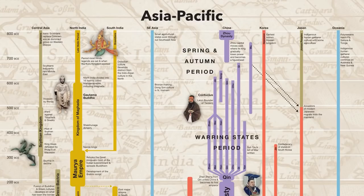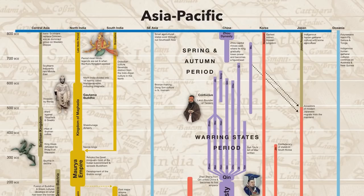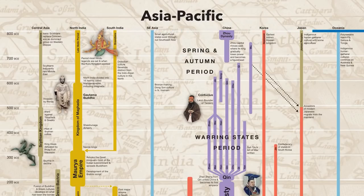All of the foldout charts begin at 800 BCE. Obviously there is a lot of history that occurred before this point, but for that you have to refer to the main chart. These more detailed regional charts were chosen to start at 800 BCE because that's around the time when people and events start to become more historically verifiable. Most of the events prior to this point lie within the Bronze Age, where we have to rely more heavily on archaeology rather than on written records.